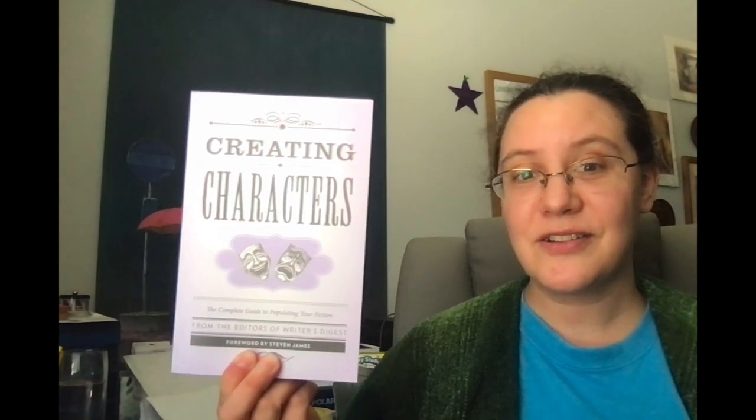Yesterday I went to Barnes and Noble and I figured I'd show you what I got. I had a really hard time deciding what to buy — do I buy something I've already read and know I want to own, or do I buy something completely new and take a chance? I decided to go with something I've already read and love, and that was All Systems Red by Martha Wells, the first book in the Murderbot series. I also decided to buy a craft book, and I got Creating Characters.